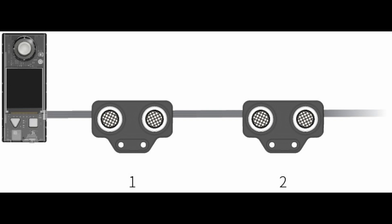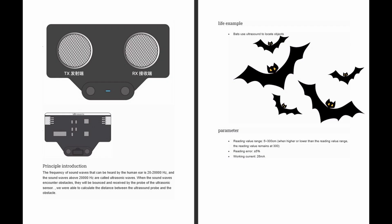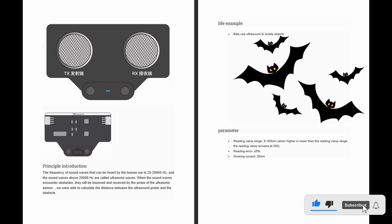As a life example, bats use ultrasound to locate objects. Sensor parameters: reading value range is 5 to 300 cm; when higher or lower than the reading value range, the reading value remains at 300. Reading error is plus or minus 5%, and working current is 26 mA.